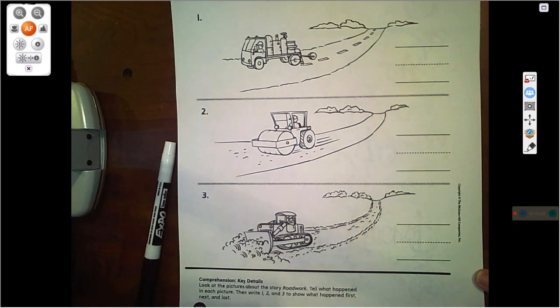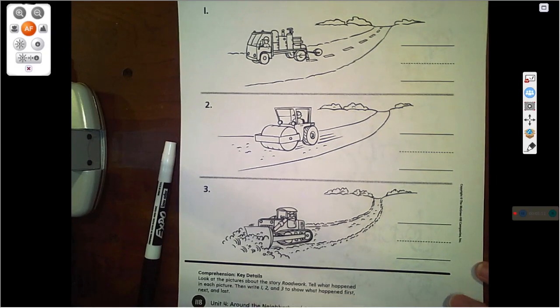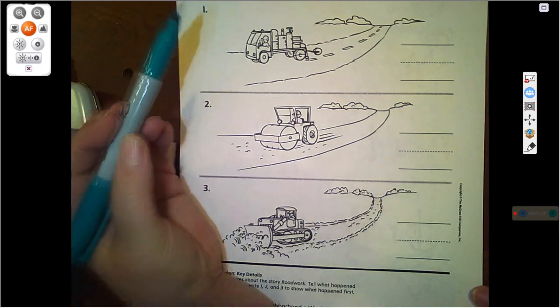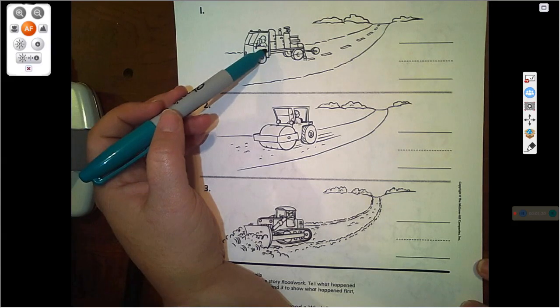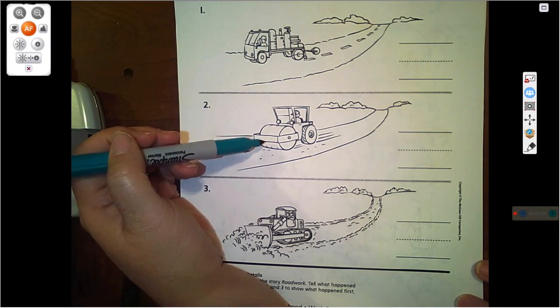So if we need to write one, two, and three to show what happened first, next, and last, which thing happened first in our book? Did they paint the lines on the road? Did they smooth out and press down the tar?